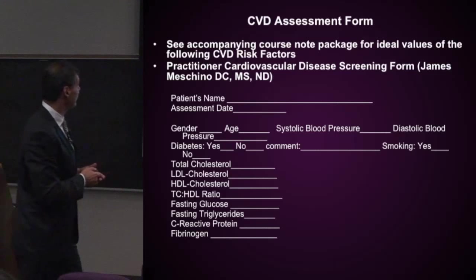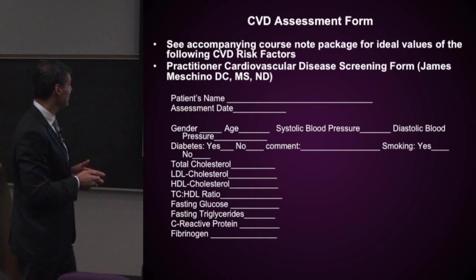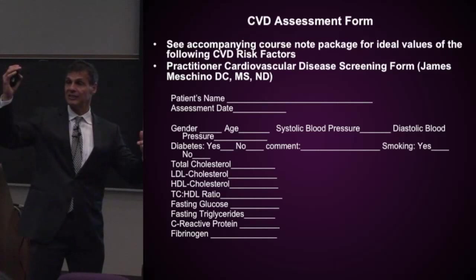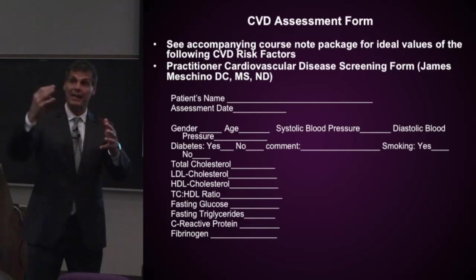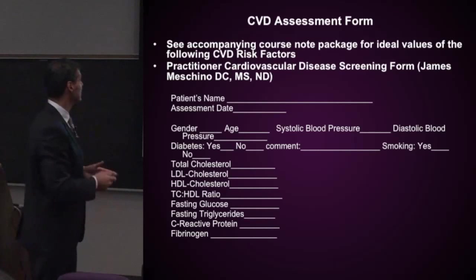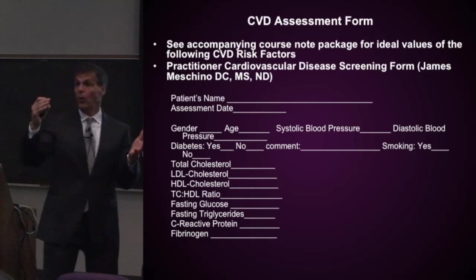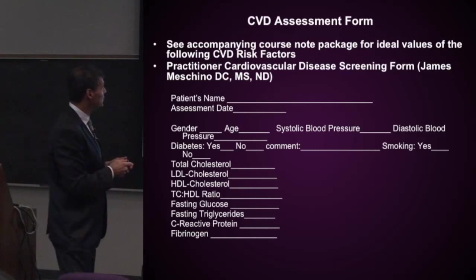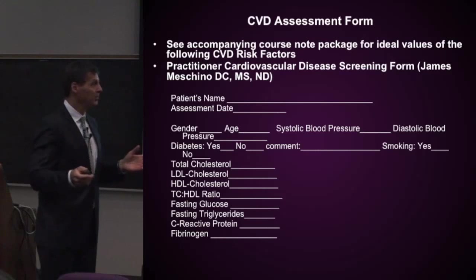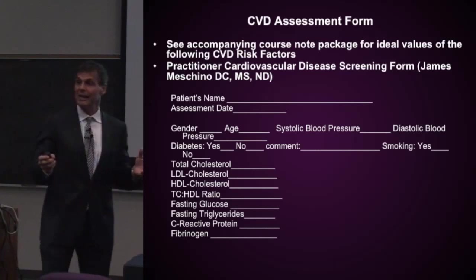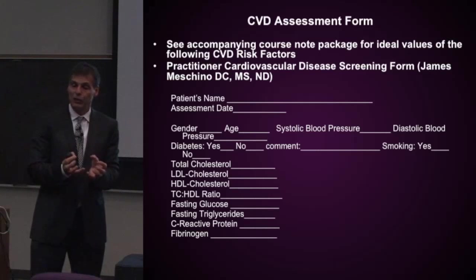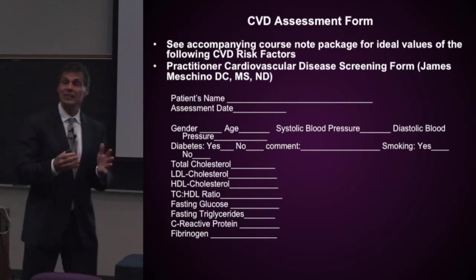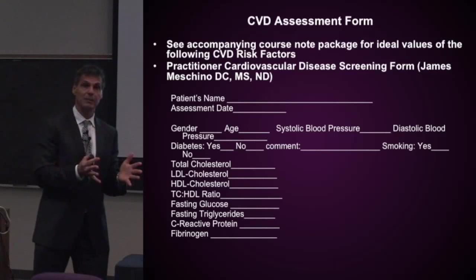So what I'm looking for here: the patient's name, the assessment date, are they male or female? Because men have more vascular disease than women — just being a man increases your risk. What is their age? As you get older, the risk of vascular disease also increases. What's the systolic blood pressure? What's the diastolic blood pressure? Is the person a diabetic? Diabetics have a greater risk for vascular disease, and if they are diabetic, are they insulin-dependent or non-insulin-dependent?